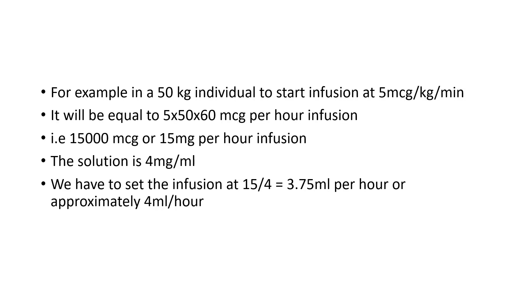In a 50 kg individual, to start an infusion at 5 microgram per kg per minute, the rate equals 5 × 50 × 60 micrograms per hour, which is 15,000 micrograms or 15 mg per hour. Since the solution is 4 mg per ml, to deliver 15 mg per hour we start at 3.75 ml per hour, approximately 4 ml per hour. So, to start dopamine at 5 microgram per kg per minute using one ampule diluted to 50 ml, the infusion rate is 4 ml per hour.